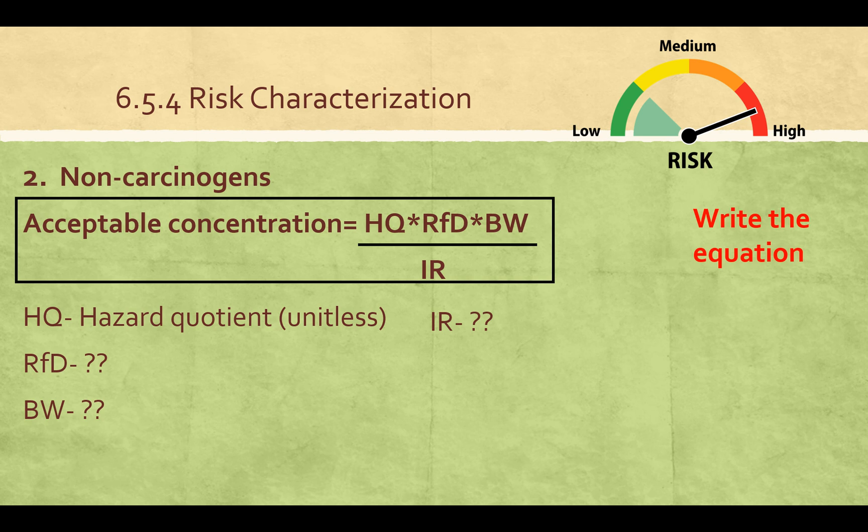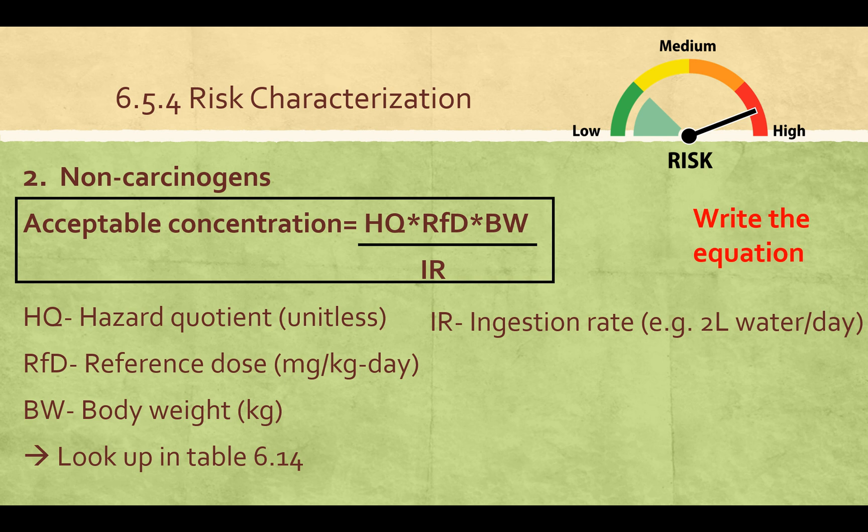Here's another equation, similar to the carcinogen equation, for calculating acceptable concentration based on hazard quotient. The acceptable concentration equals the hazard quotient times RFD times BW over IR. IR is ingestion rate — you can look that up in table 6.14 in the third column. RFD is the reference dose in milligrams per kilogram per day, and BW is body weight in kilograms.